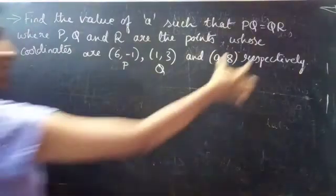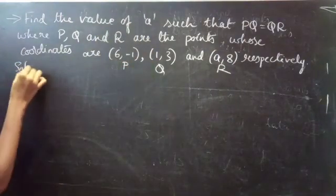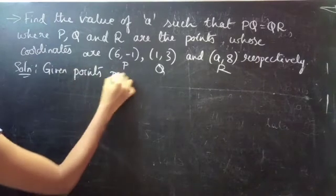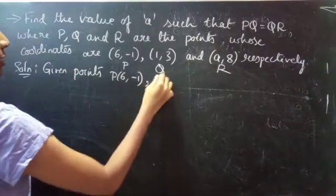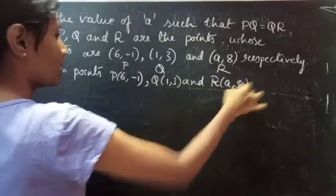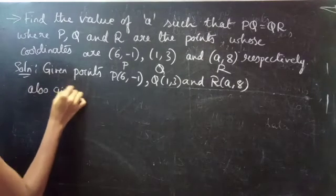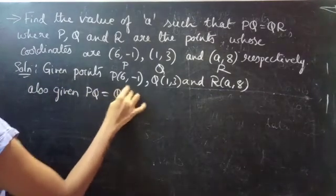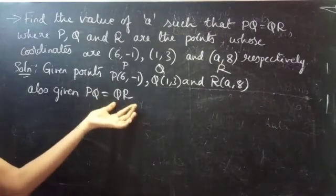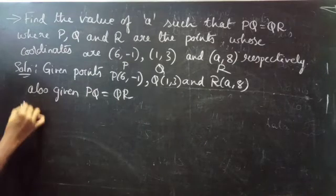Using this condition we have to find the value of A. Solution: given points P(6, -1), Q(1, 3) and R(A, 8). Also given PQ equals QR. So to use this condition we need to know the distance PQ and QR.